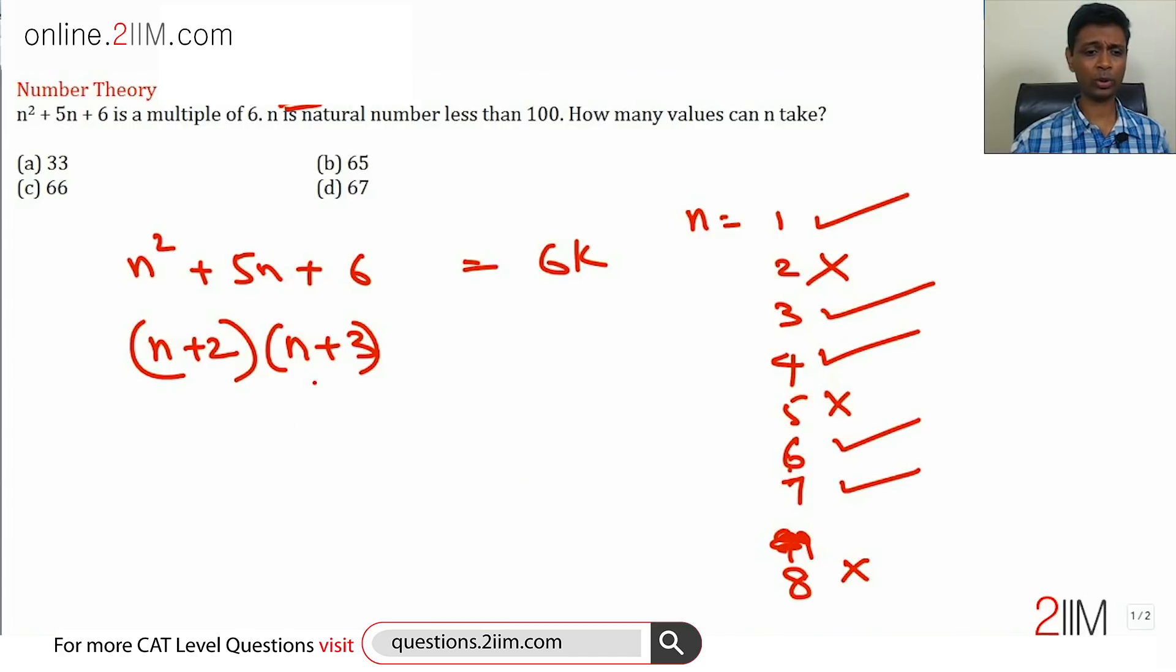(n+2)(n+3) - think about it. n divided by 3, remainder can be 0, 1, or 2. If n by 3 remainder is 0, then n+2 remainder would be 2, n+3 remainder would be 0, so this will be a multiple of 3, that will work. If n by 3 remainder were 1, n+2 will leave a remainder 0, n+3 will leave a remainder 1, this will again be a multiple.